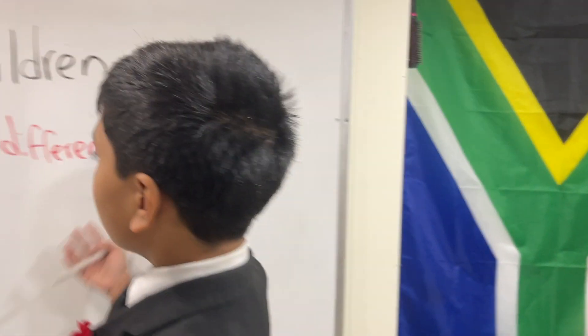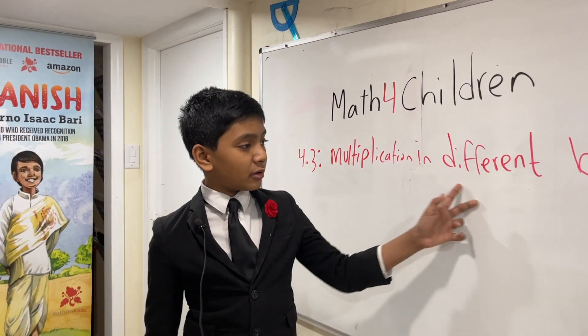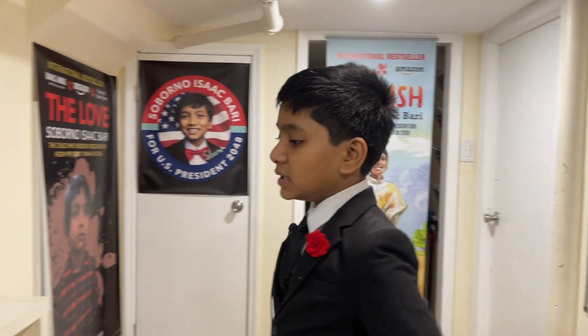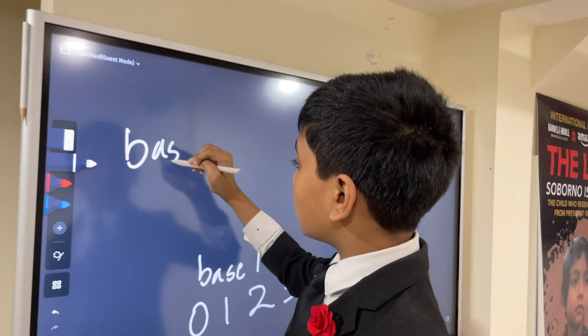Hello everybody, my name is Professor Saborno Isaac Berry from the da Vinci Institute in South Africa. Today on math for children we're going to be doing lesson 4.3, multiplication in different bases.